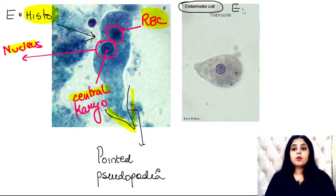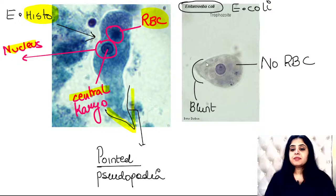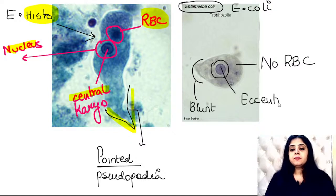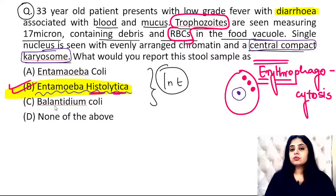Entamoeba coli — everything is opposite. It has blunt pseudopodia instead of pointed, no red blood cells inside, and the karyosome is eccentric — slightly off-center rather than central. So in Entamoeba coli: blunt pseudopodia, no RBCs, eccentric karyosome. Everything is reversed compared to Entamoeba histolytica.